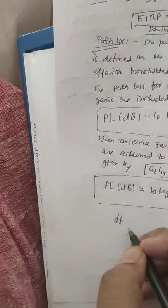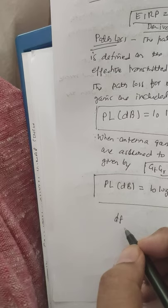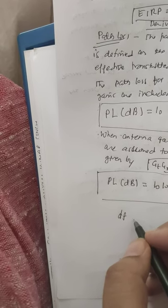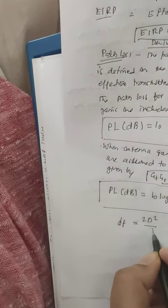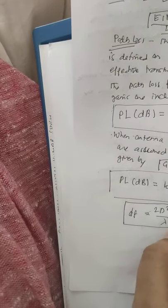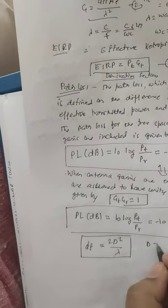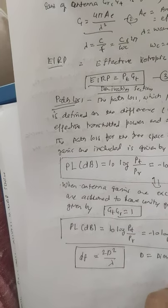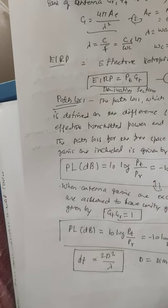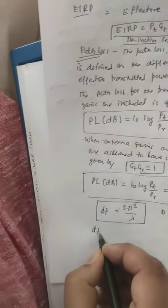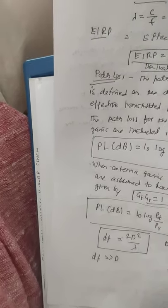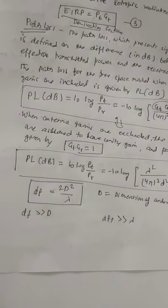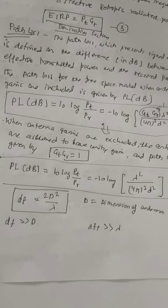For the far field, the distance df is equal to 2D² divided by lambda, where D is the maximum dimension of the antenna. Two conditions must hold: df must be greater than D, and df must be greater than lambda.